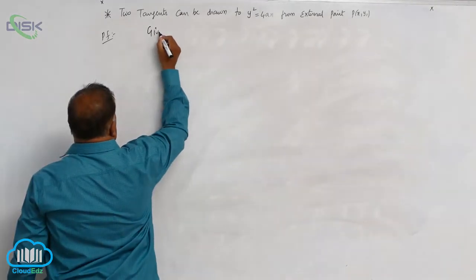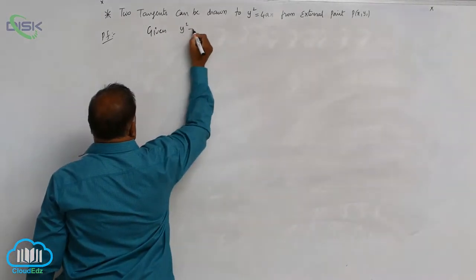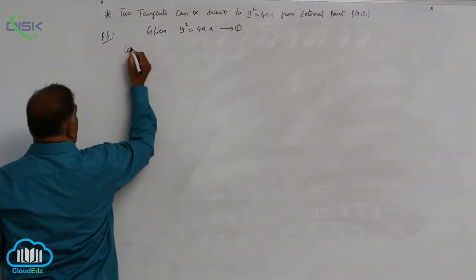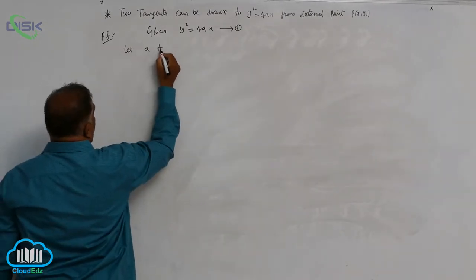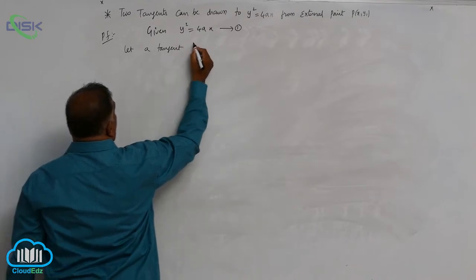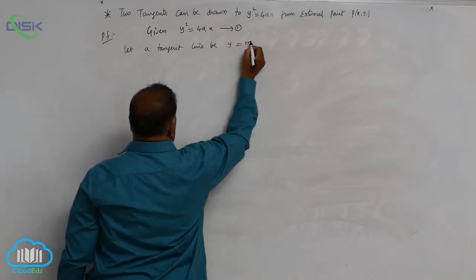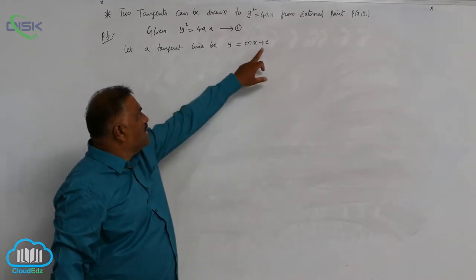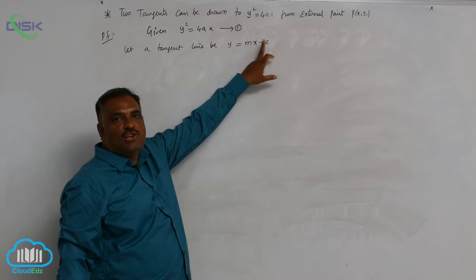Given the parabola is y squared equals 4Ax, equation 1. Let a tangent line be y equals mx plus c. We are already familiar with y equals mx plus c being a tangent to the parabola.